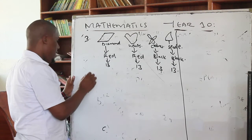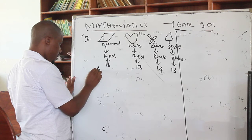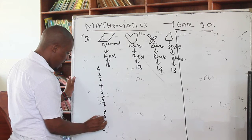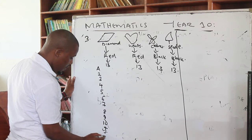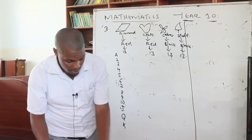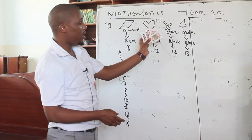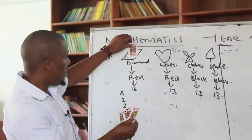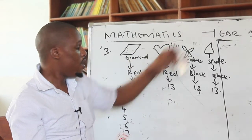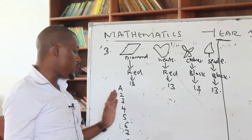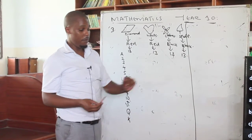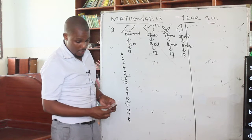Out of the 13 cards in each suit, they are labeled: Ace, 2, 3, 4, 5, 6, 7, 8, 9, 10, then Jack, Queen, and King. Every denomination — whether it is an Ace, a 2, a Jack, or a King — has 4 cards total, one from each suit.